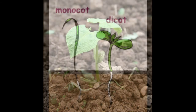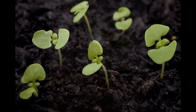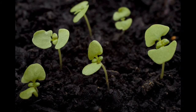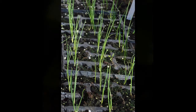Like the bean plant above, a dicot has two leaves after germination, whereas a monocot has one leaf after germination. So next spring, when you are out and about and you are looking at those pesky weeds coming up, take a closer look. You might be able to tell whether or not it is a monocot or a dicot.